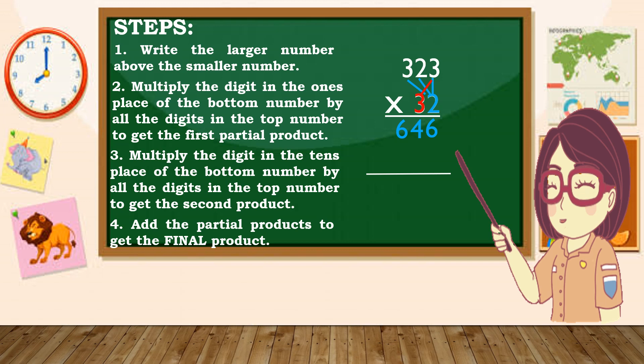Kaya ilalagay natin ang 9 sa tapat ng 4. And 3 times 2 is 6, 3 times 3 is 9. So 969 is our second partial product. Next step is add the partial products to get the final product. Let's add — bring down 6, since wala naman na siyang katapat.